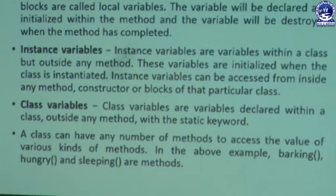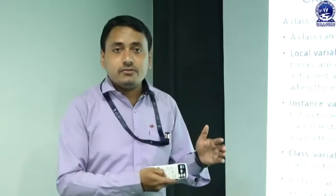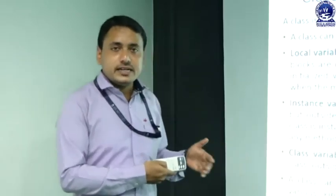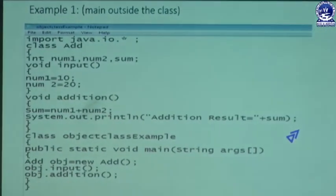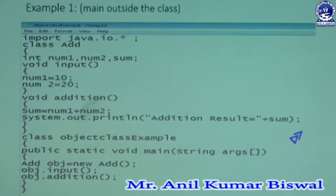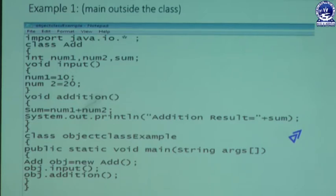A class can have any number of methods to access data fields. Inside a class you can declare variables related to your class, and you can also declare methods to handle data field activities related to behavior. In the next example, the main method is outside the class — meaning we never create the object of the class that contains the main method. This program uses two different classes: one class contains the public static void main method, and another class contains the addition activity.